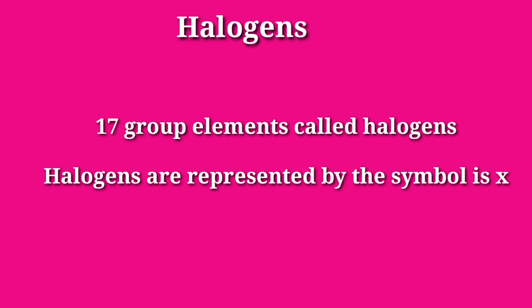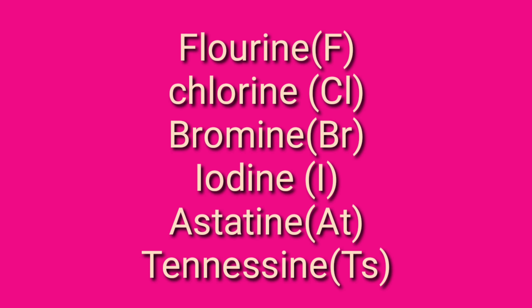What are halogens? 17th group elements are called halogens. Halogens are represented by the symbol X. Halogens are fluorine, chlorine, bromine, iodine, astatine, and tennessine.